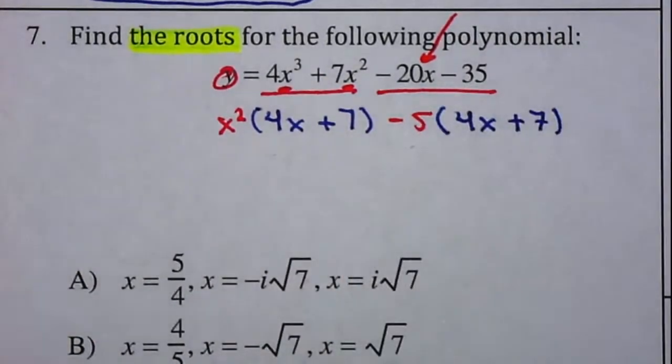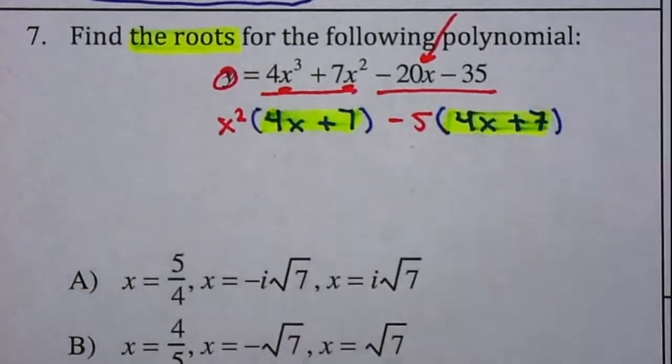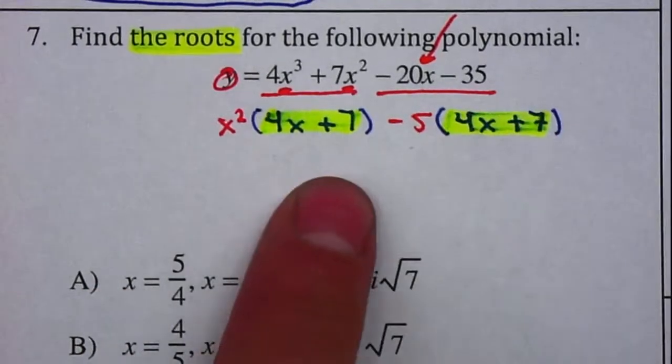One of the things that you'll notice is when we're doing factor by grouping, those two should be exactly the same. Otherwise, you will not be able to factor by grouping.